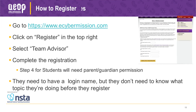The registration link is right up in the top right. You would select 'team advisor.' If students are completing their registration, they select 'student.' Step four of the student registration requires parent or guardian permission. Students don't need to know their topic before registering — that's done as a later step. We advise you to register first, because one final step of their registration is that they can link to you. When you log in, you'll see a list of all students who have chosen you as their team advisor, and you'll be able to put them on teams and activate their mission folder.